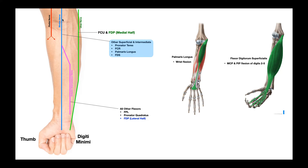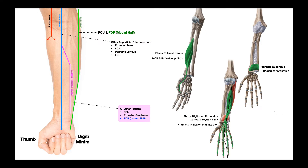As mentioned, the median nerve gives off another major branch before it gets to the hand — the anterior interosseous nerve. All other muscles in the anterior forearm compartment are going to be innervated by this anterior interosseous nerve, and that's what we're going to look at right now.